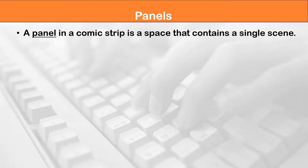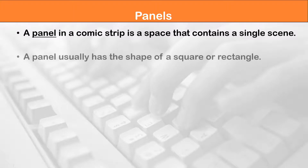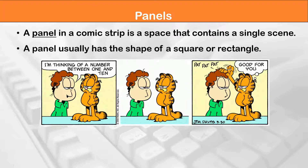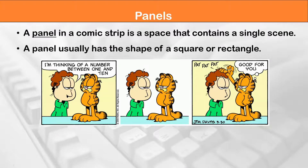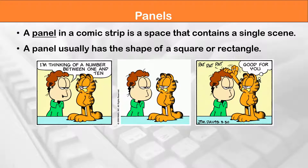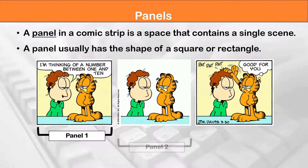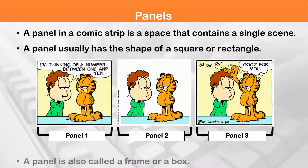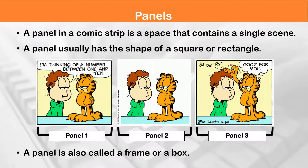A panel in a comic strip is a space that contains a single scene. A panel usually has the shape of a square or rectangle. In the comic strip below, we have three panels: panel 1, panel 2, and panel 3. A panel is also called a frame or a box.